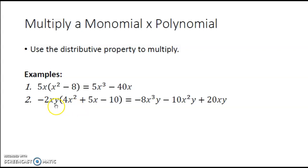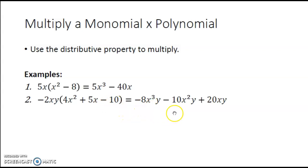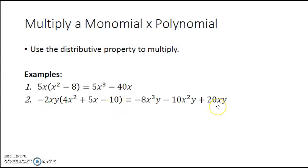In the second example, we have the monomial negative 2xy times the trinomial 4x squared plus 5x minus 10. We are going to distribute negative 2xy to each of the three terms of the trinomial, so we will get three terms in our product. Multiplying negative 2xy times 4x squared gives negative 8x to the third y. Then negative 2xy times 5x gives negative 10x squared y, and finally negative 2xy times negative 10 gives positive 20xy.